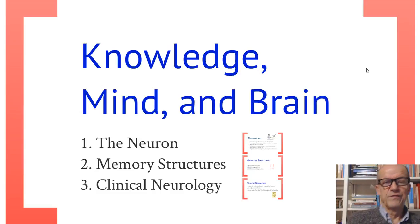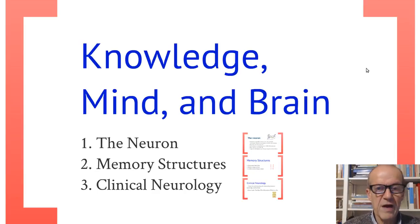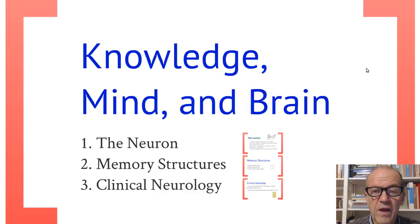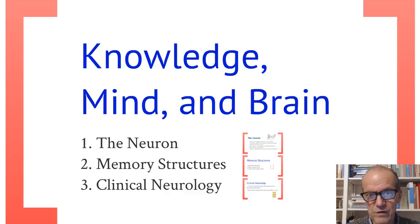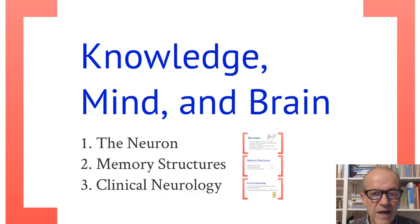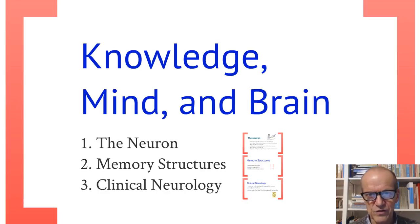The last unit of this module is about the relationship between knowledge, mind, and brain. We have been discussing the characteristics of the human information processing system and the way various types of knowledge can be distinguished and how people actually organize their knowledge. But now we try to link that to what we already know about how the brain actually operates and which structures can be distinguished within the human brain.